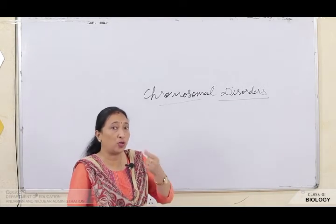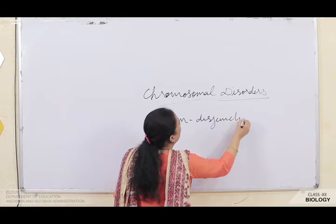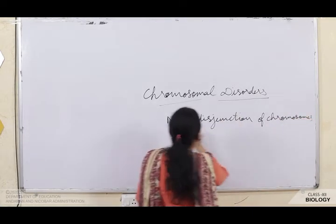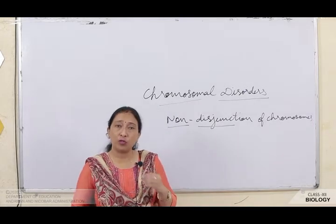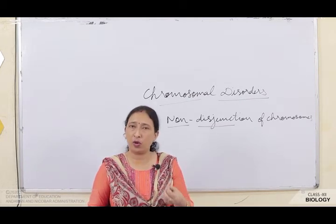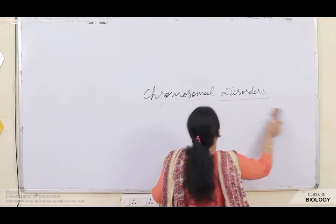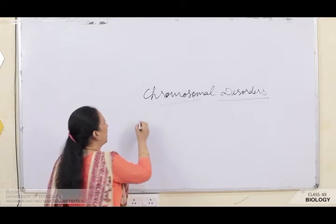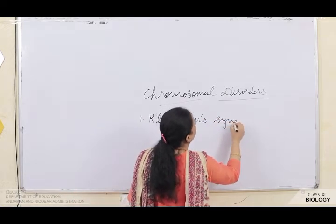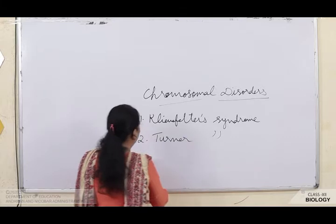Chromosomal disorders: during crossing over I mentioned a term known as non-disjunction — that is, non-disjunction of chromosomes. Non-disjunction means chromosomes fail to separate. During the MII stage, one gamete will get a larger portion and another a smaller portion. This non-disjunction is one of the reasons for chromosomal disorders. The chromosomal disorders mentioned in your book are Klinefelter syndrome, Turner syndrome, and Down syndrome.